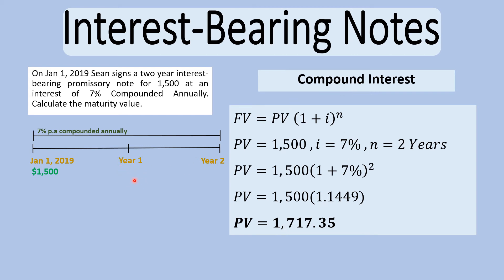The compound interest answer is higher because in year one the note's total value becomes $1,500 + $105 = $1,605, and in year two you multiply $1,605 × 7% to get the interest — giving $1,717.35. With simple interest, each year's interest is calculated on the original $1,500, which is why there's about a $7 difference between the two results.